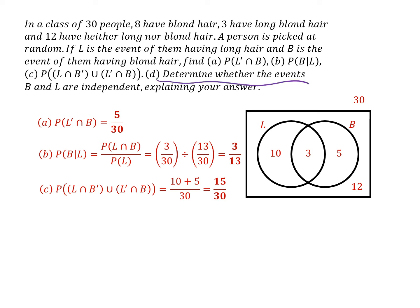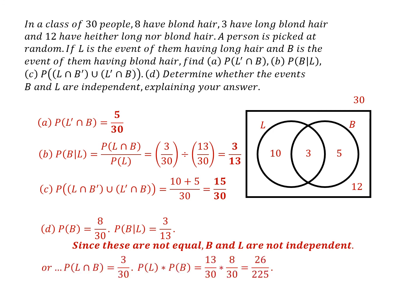Finally, we need to determine whether events B and L are independent. There are two ways of doing that. The first way is to compare P(B) with P(B|L). We've already calculated P(B|L) = 3/13, and P(B) = 8/30. These are not equal, so B and L are not independent. The second way is to compare P(L ∩ B) with P(L) × P(B). P(L ∩ B) = 3/30, while P(L) × P(B) = 13/30 × 8/30 = 26/225. These are not the same, so the two events are not independent.